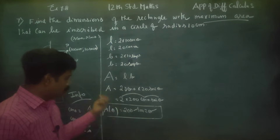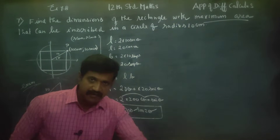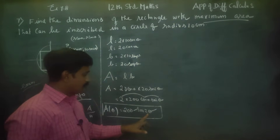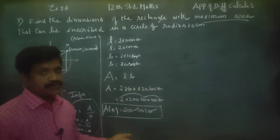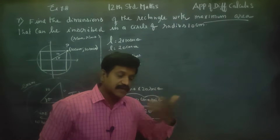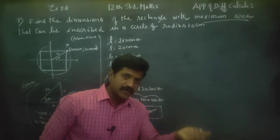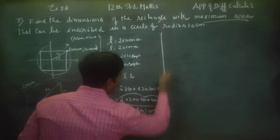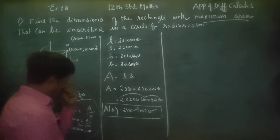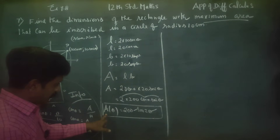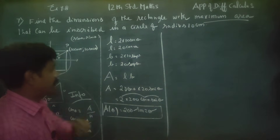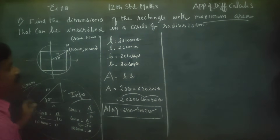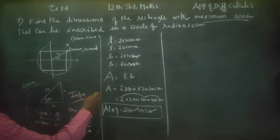We now have a function in a single variable, theta. Differentiation will be done, the critical number will be found, and the second derivative test will be applied.